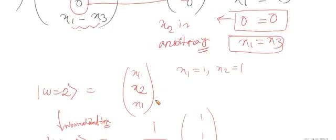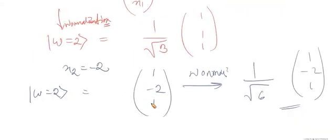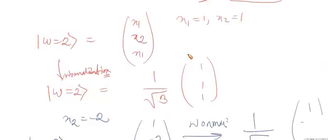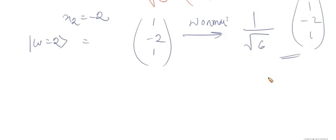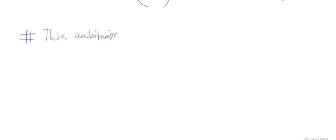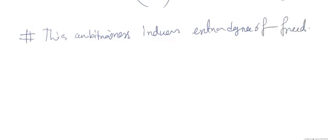We have 3 eigenvalues, and normally each eigenvalue should yield a unique eigenvector mutually orthogonal to the others. But this is not the case when eigenvalues repeat. Omega = 2 repeats, and instead of getting 3 distinct eigenvectors, we get 2 eigenvectors with one entry arbitrary. The significance of this arbitrariness is that it induces an extra degree of freedom.